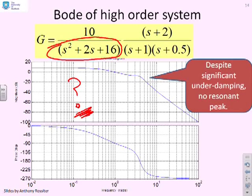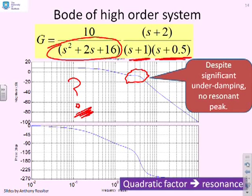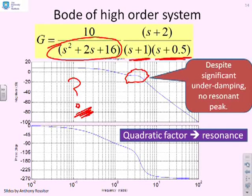The bottom line is that the other two poles have swamped the impact of the resonance. While the gain plot has this little flat area here, there isn't a resonant peak. Despite significant underdamping, there's no resonant peak because it's been swamped out by the other poles. That can happen in some cases, but obviously not always.